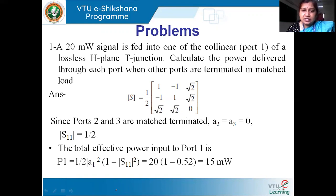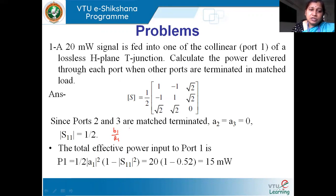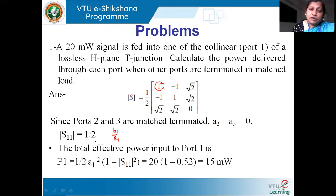So, the reflection coefficient at port one is B1 over A1, which is equal to S11. S11 is B1 over A1, keeping A2 and A3 equal to zero. From the matrix, we can directly take the value of S11. Here it is one-half — that is, one times one-half, so S11 equals one-half.